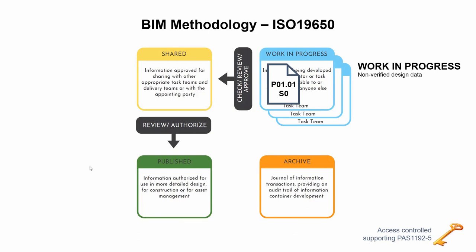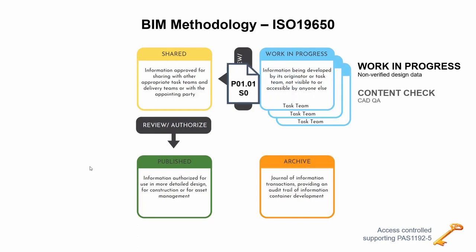ProjectWise will help you to create the document with the correct code and you can then work in the normal way with your chosen application. When the document is ready, the user will choose to change the status of the document from work in progress to content check. At this point, the document is checked by the relevant person or via an automated process if that's enabled for the project.